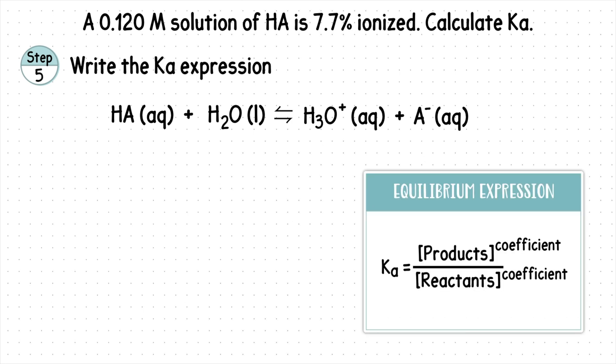Step five, write the Ka expression. We never include liquids in our equilibrium expression, so our products will go on top, and our only reactant will go on the bottom.